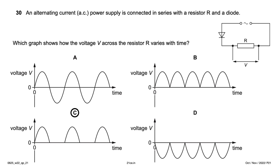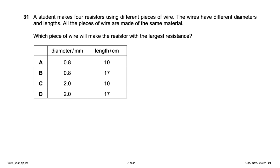A student makes four resistors from different pieces of wire with different diameters and lengths, all same material. Resistance R = ρL/A, where resistivity ρ is constant. R is directly proportional to length and inversely proportional to cross-sectional area (and thus diameter squared). The highest resistance comes from the longest wire with the smallest diameter: length 17, diameter 0.8 — option B.